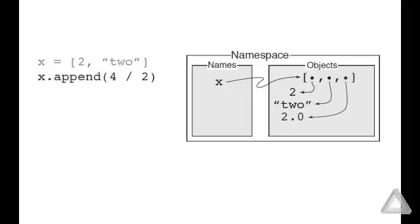Now let's have a statement where we call the append method and the argument of the append method is 4 divided by 2. That argument evaluates to the float 2.0 and then the list is extended by one element. So it now has three elements. There is this container with three slots essentially.